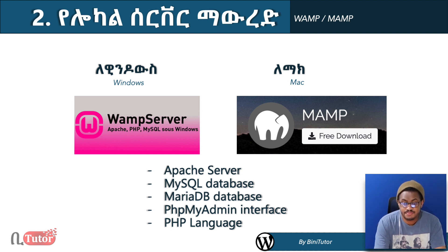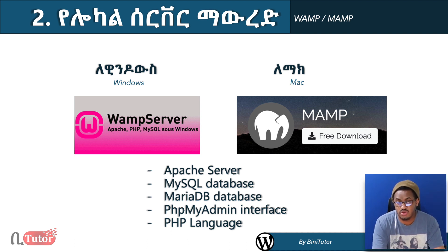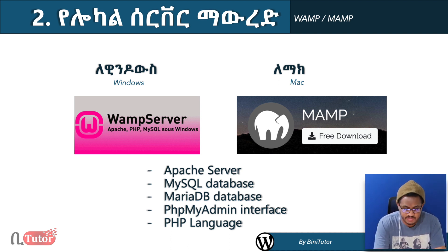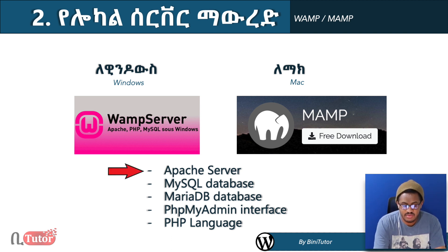You can find the download link in the description. The link is included for both Windows and Mac. WAMP includes the Apache server as one of its core downloads.